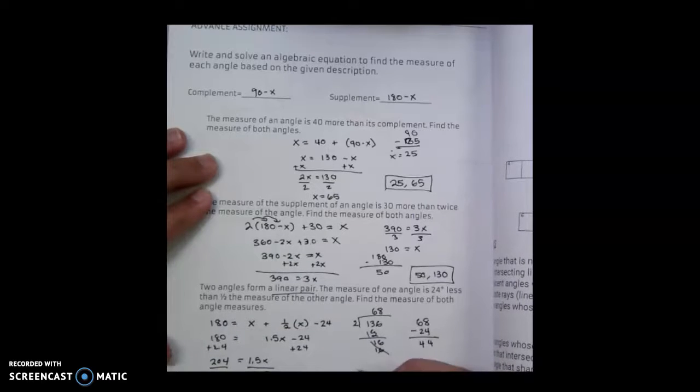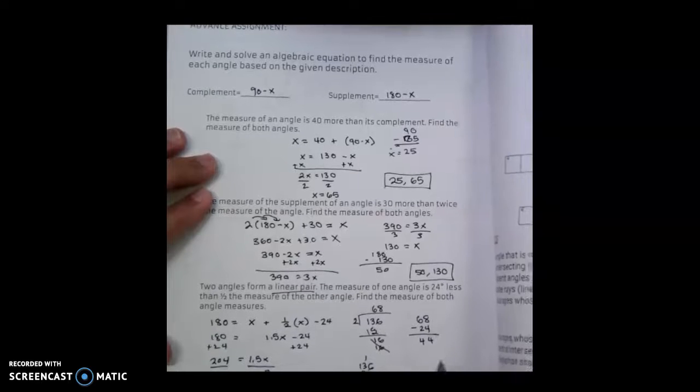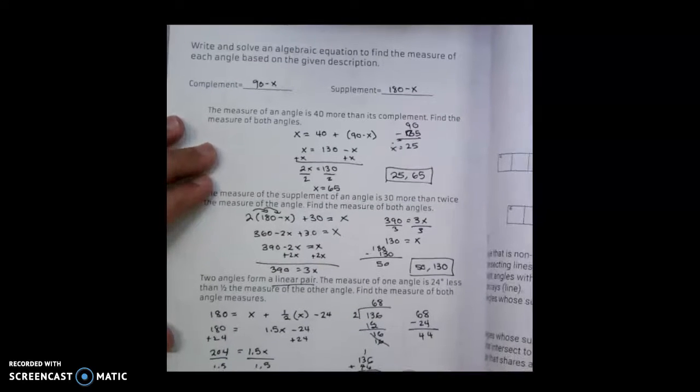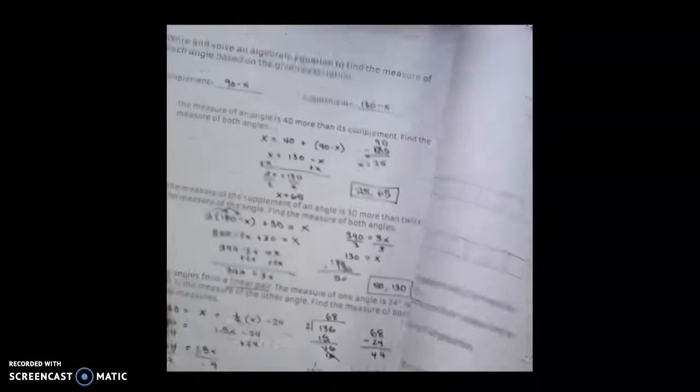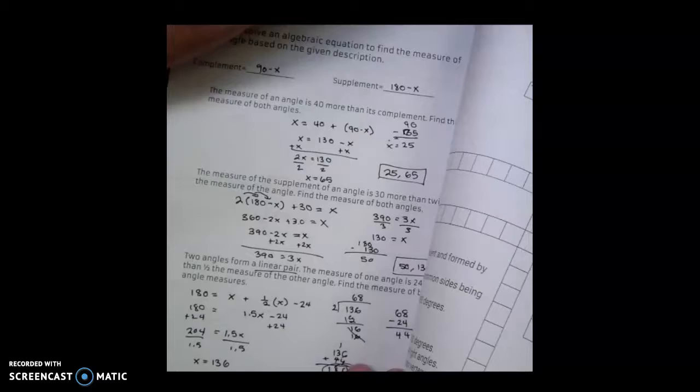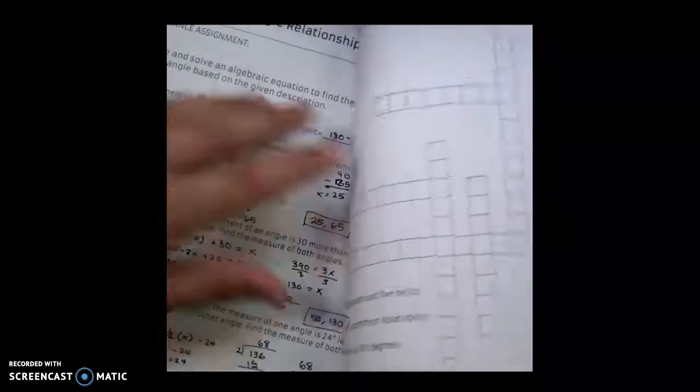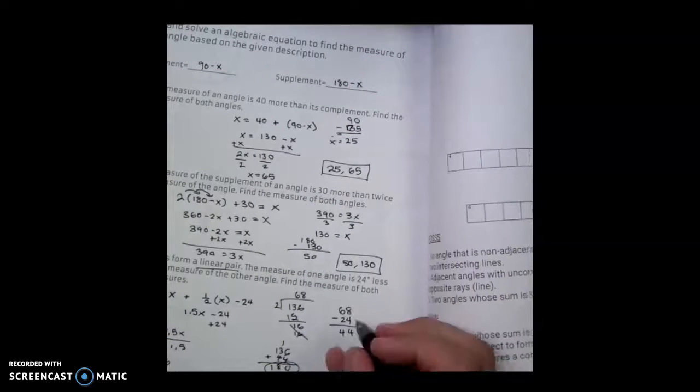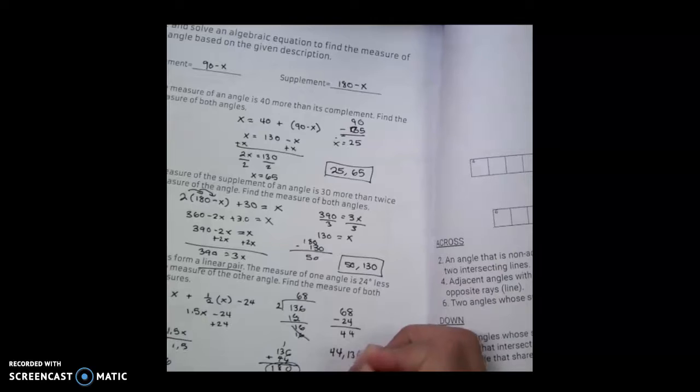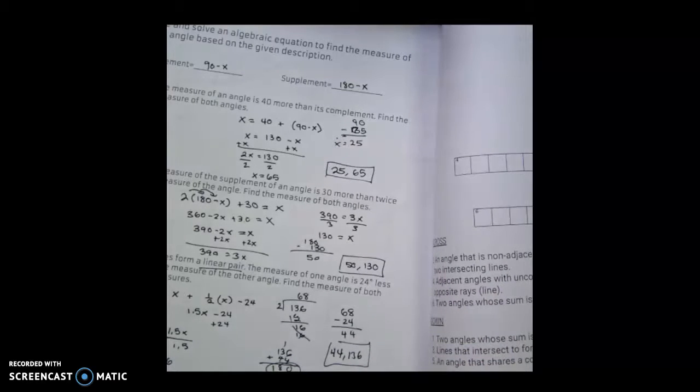And if I were to add those together, my two x's, I get 0, 1, 8, 1, which is 180, which is what we want. So my final answer, sorry, my final answer here is going to be 44 and 136. Sorry for that little flub at the end, but there you go. Those are the advanced problems.